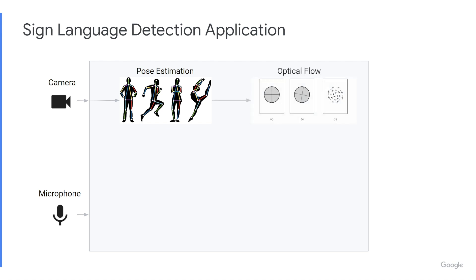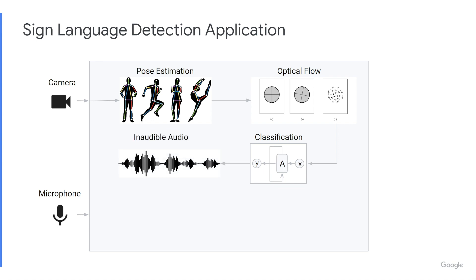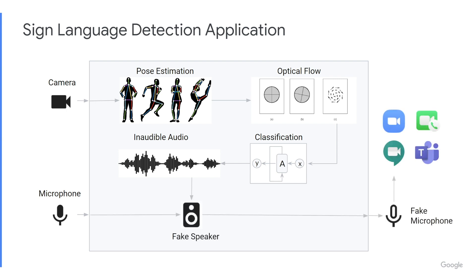Then, we calculate an optical flow vector from which our model predicts whether the user is currently signing or not. If the participant is predicted to be signing, we transmit inaudible audio through the participant's microphone. This audio is then caught by any video conferencing app, which thinks the signing user is now speaking.